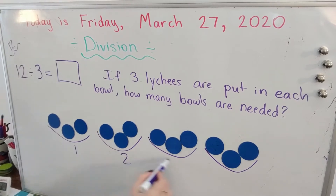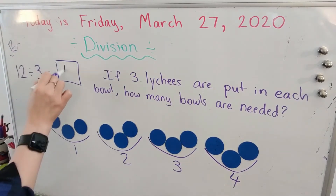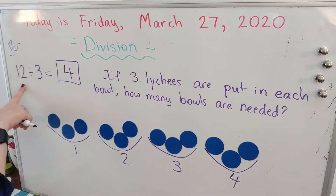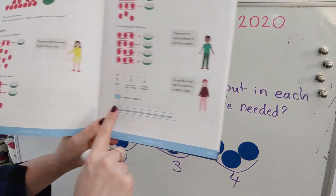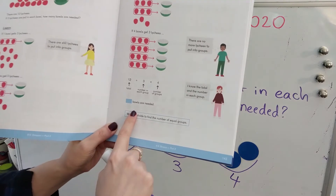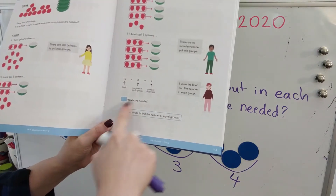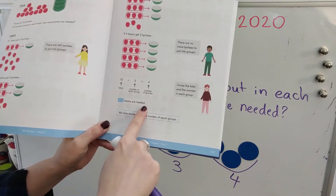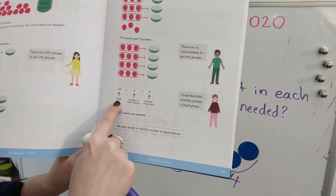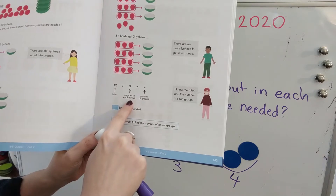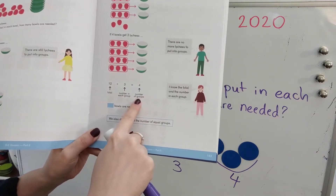There are one, two, three, four groups of three. So our answer is four. 12 divided by three equals four. So all the way down here in your book, it says how many bowls are needed — we're going to write down four bowls are needed. Again, 12 is the total number of leeches, three is the number in each group, and four is the number of groups.